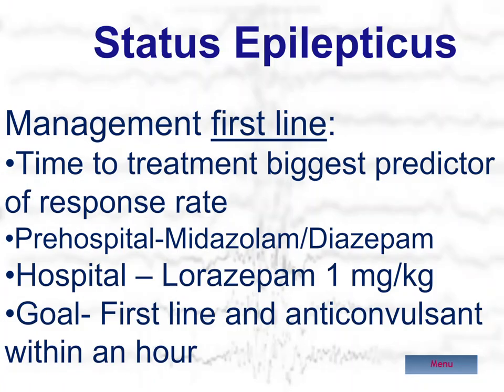The so-called RAMPART trial — Rapid Anticonvulsant Medication Prior to Arrival Trial — demonstrated that it was the time to treatment which was the best predictor of how the patient is going to respond to interventions to manage or treat their convulsive status epilepticus. Therefore, it's best to begin treatment out in the field. This is usually done with a benzodiazepine, preferably midazolam, which can be administered intramuscularly so as to avoid the necessity for intravenous placement, but other patients have been given rectal valium or buccal or intranasal midazolam, and that all works well.